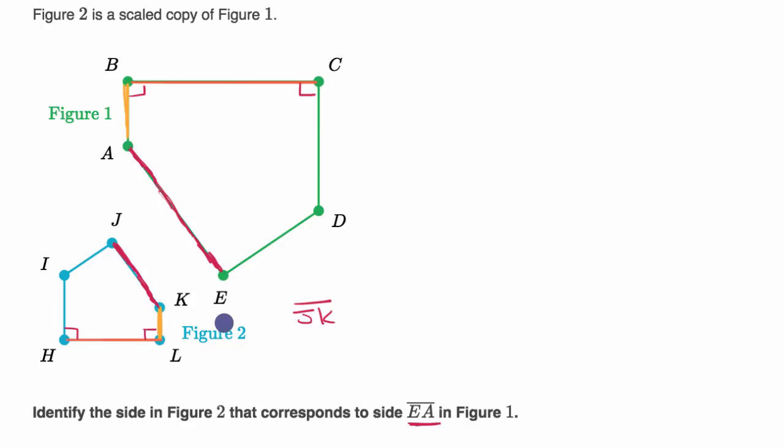And if someone wanted to say what points correspond to which point, well, you can see that BA corresponds to LK and BC corresponds to LH. So we would know, for example, that point B right over here would correspond to point L in Figure 2 right over here. And we could use similar logic for the other points.